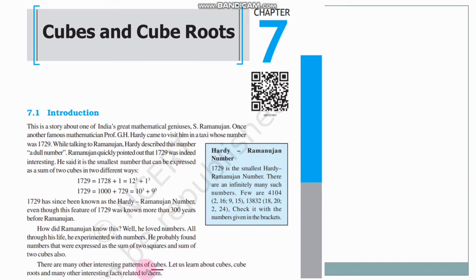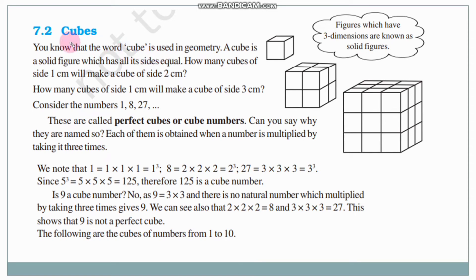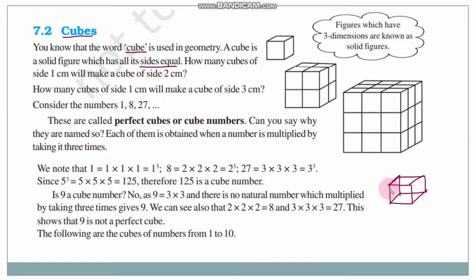First, let us understand what a cube is. You know that the word cube is used in geometry. A cube is a solid figure which has all its sides equal. In a cube, all edges are equal. A cube is a three-dimensional figure. Figures which have three dimensions are known as solid figures.